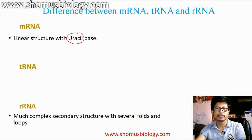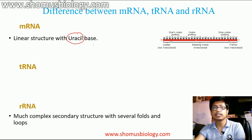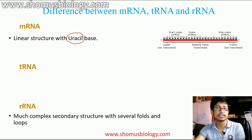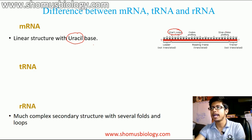All types of RNAs contain uracil instead of thymine. The mRNA carries all the codons for protein synthesis. Codons are three-nucleotide sequences which specify a particular amino acid. The mRNA generally contains a start codon, where the process of protein synthesis begins, and a stop codon, where protein synthesis ends.